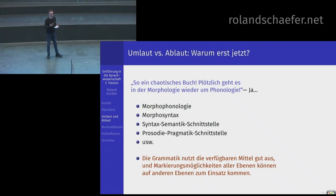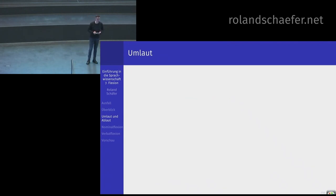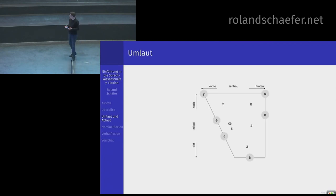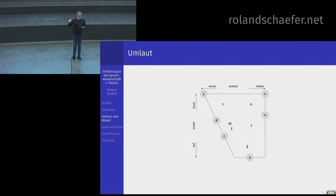Wie soll man sonst in der Morphologie irgendwelche Funktionen markieren, wenn man dafür nicht phonologische Mittel einsetzt? Entweder hängt man was hinten dran oder man ändert einen Vokal. Jetzt gucken wir uns zwei von diesen Möglichkeiten an. Eigentlich ist nur eine im Kern phonologisch, nämlich der Umlaut. Da schauen wir uns das Vokaltrapez an, das Sie kennen. Da sehen Sie die gespannten und die ungespannten Vokale. Was ist jetzt Umlaut, wenn wir den sozusagen hier eintragen?